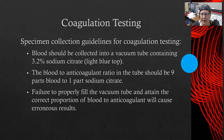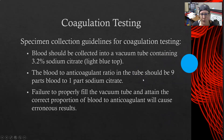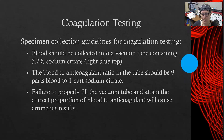Any good test starts with a good specimen, and it is very important to have the proper specimen for accurate coagulation testing results. Blood should be collected into a vacuum tube containing 3.2% sodium citrate — it is a light blue top. The blood-to-anticoagulant ratio in the tube should be nine parts blood to one part sodium citrate. If the tube is properly filled to its capacity, that ratio should be accurate. If the tube is only half filled, the ratio will not be nine to one, which can cause erroneous results.